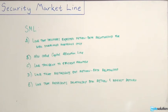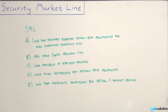B, it's also called the capital allocation line. C, the line that is tangent to the efficient frontier of all risky assets. D, the line that represents the expected return beta relationship. Or E, the line that represents the relationship between an individual security's return and the market return. Let's look at our options and see if we can eliminate some right away without having to refer to the security market line equation.